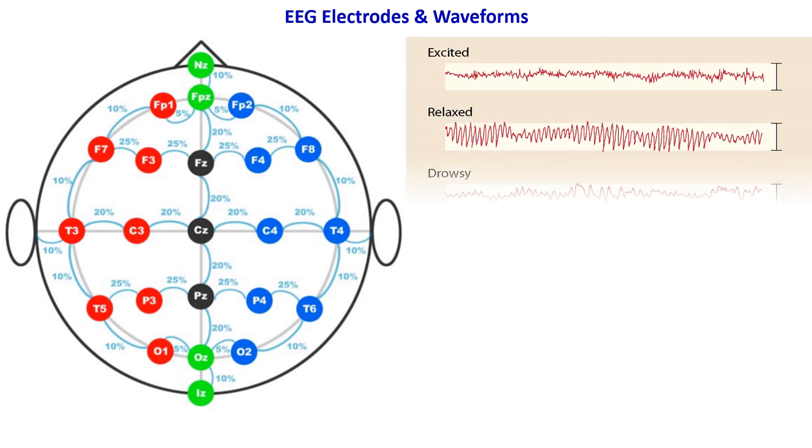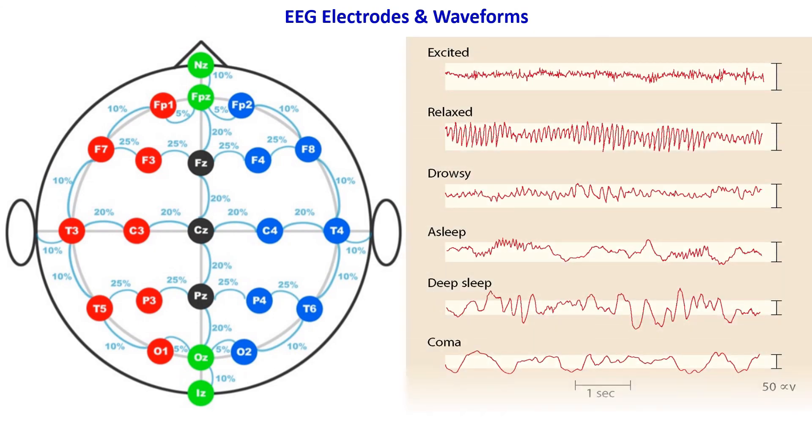The output of the EEG recording system is shown. These waveforms vary depending upon the state of the brain.